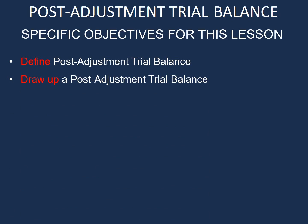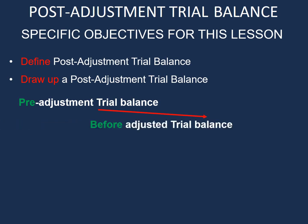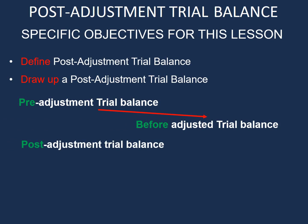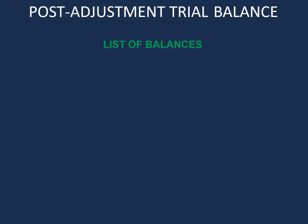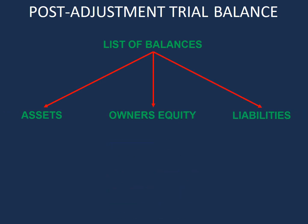Before we do that, let's have a look at the following. The pre-adjustment trial balance means before the adjustment trial balance. The post-adjustment trial balance means after the adjusted trial balance. And finally, the post-closing trial balance means after closing transfers have been done on the trial balance. Our post-adjustment trial balance comprises a list of balances of our assets, our owner's equity, and our liabilities after the year-end adjustments have been taken into account.